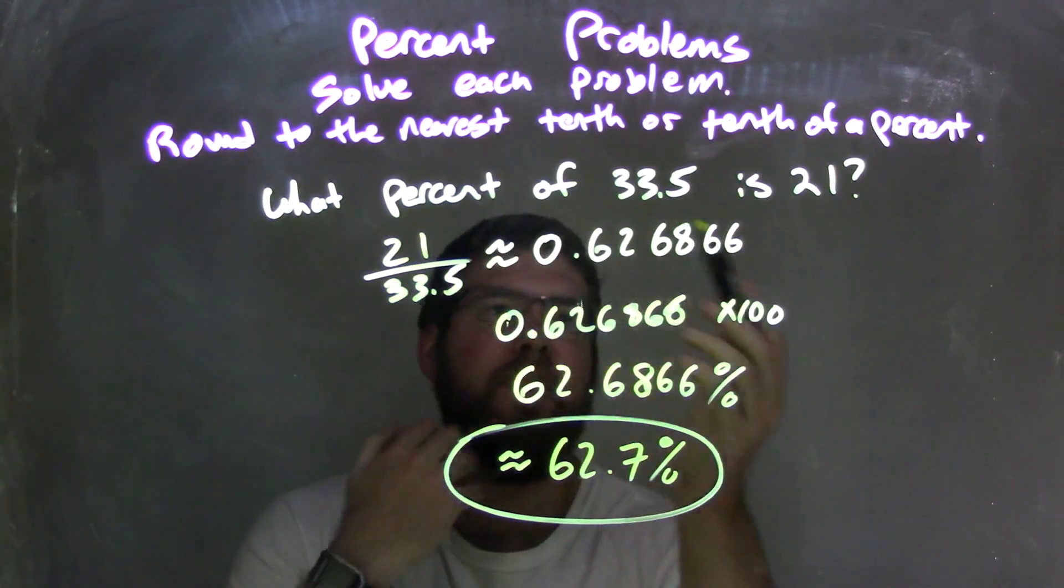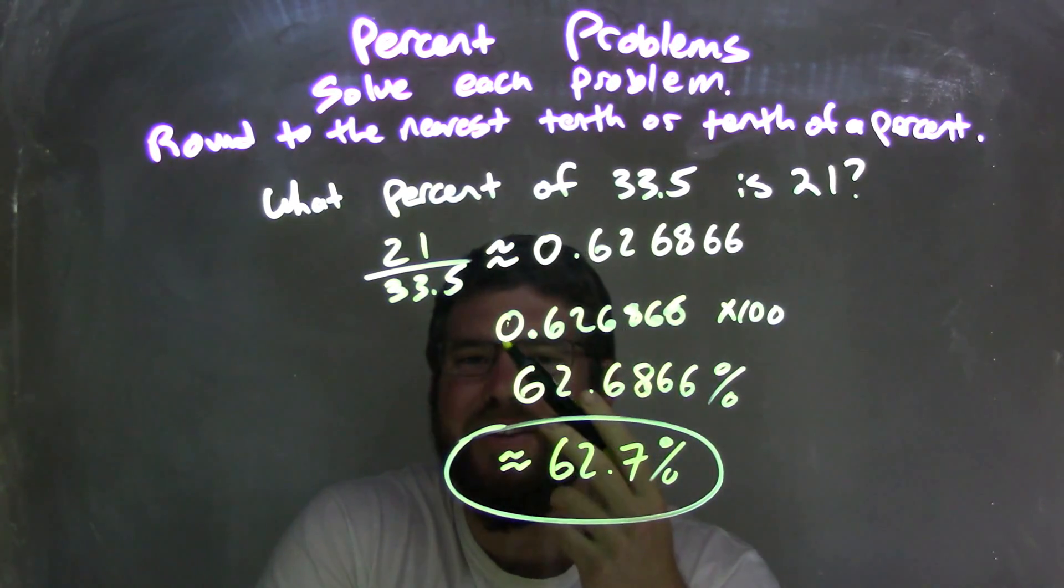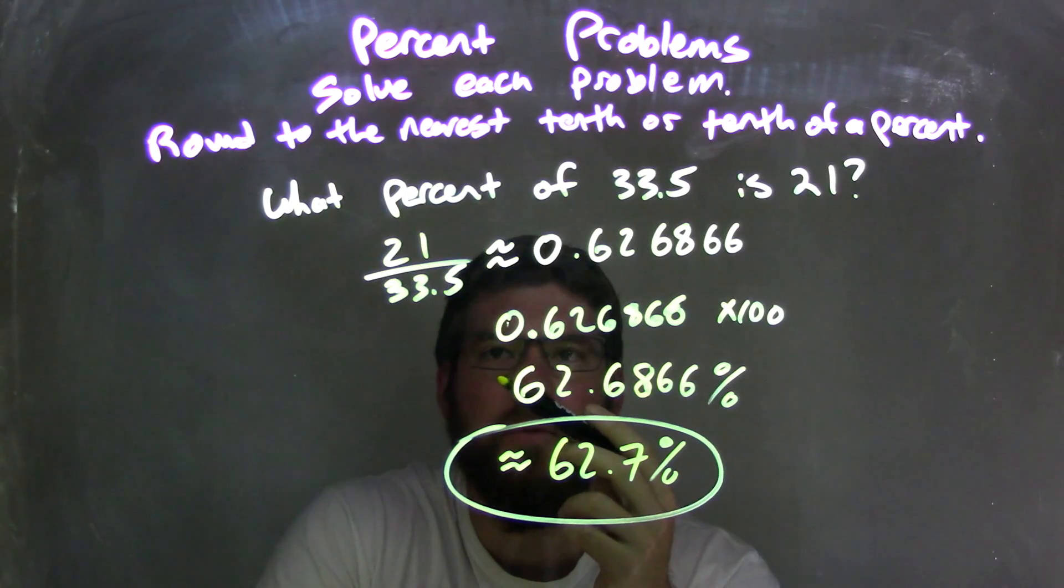In fact, we started with what percent of 33.5 is 21. So I took 21 divided by the first one, 33.5.